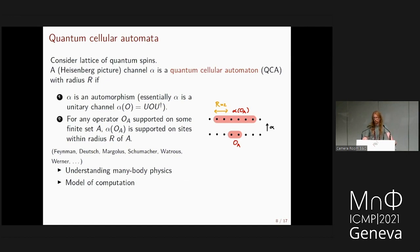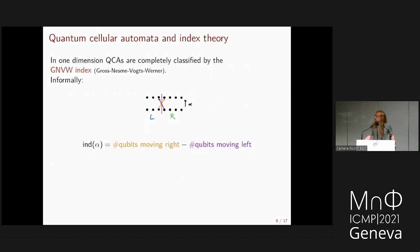Strictly local dynamics are formalized by the notion of a QCA (quantum cellular automaton): a unitary quantum channel where any operator supported on a finite set is mapped to an operator supported within radius R of that set. In 1D, QCAs are completely classified by the GNVW index, which measures the number of qubits moving right minus those moving left when you cut the chain. The index is zero for a quantum circuit and log(D) for a translation, where D is the local Hilbert space dimension. The index is additive under composition and tensor products, so every 1D QCA is a composition of translations and a circuit.